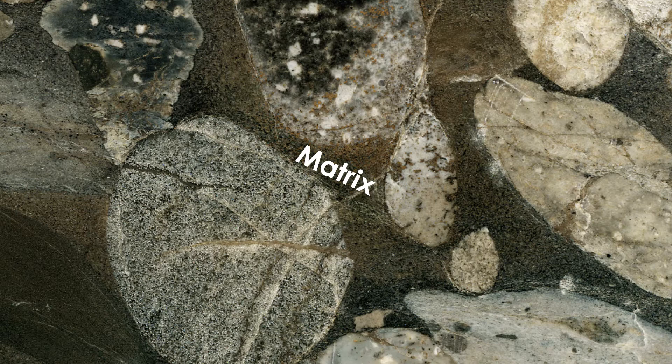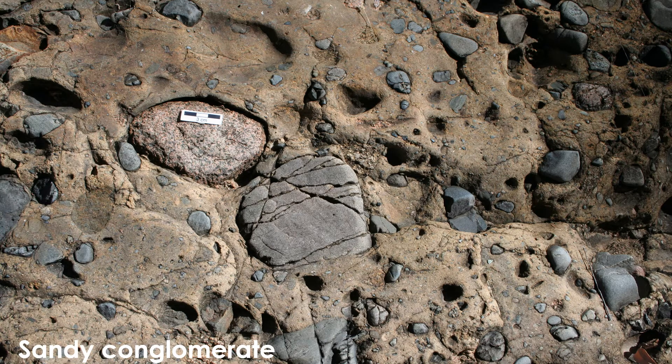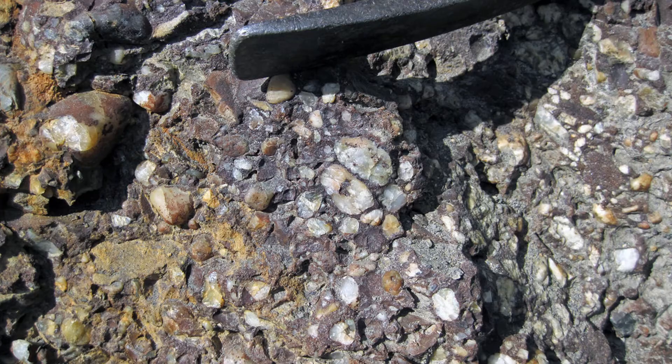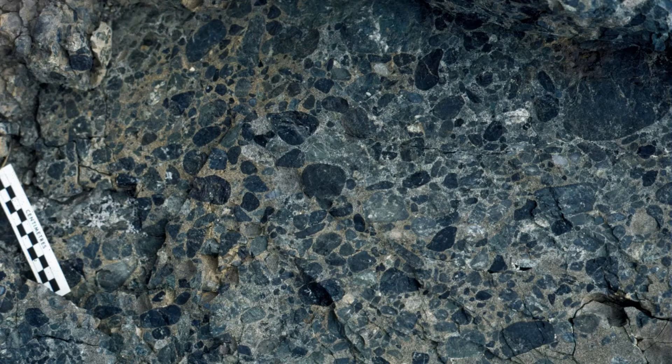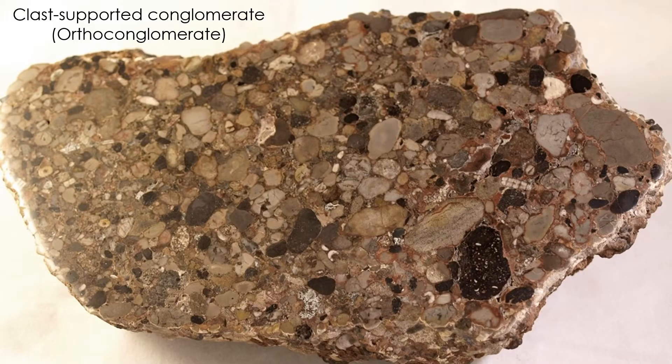The matrix can consist of clay, silt, and sand-sized grains. You may even use the composition of the matrix to help describe the lithology of the rock. For example, if the matrix consists of sand, then you can call it a sandy conglomerate. It is customary to include as much information as possible in the description of a rock and its lithology. Some conglomerates contain more clasts whereas others primarily consist of matrix. If the large clasts all tend to touch each other throughout the rock, then we call it a clast-supported conglomerate, or orthoconglomerate.